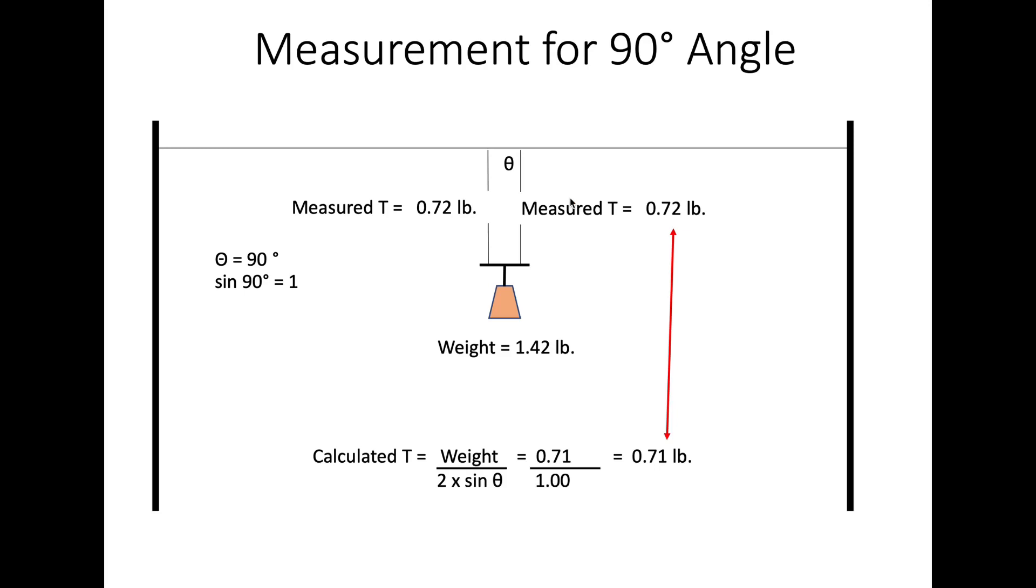Okay, here we had 90 degrees. Basically, the weight just suspended by two separate ropes. No angle really. The sine of 90 is 1. We measured 0.72 on each of these. Our weight was, again, 1.42. So we divide 0.71 by the sine of 90, which is 1. We end up with 0.71. Since we can only measure to plus or minus 0.02, we're going to live with that. That's pretty close.